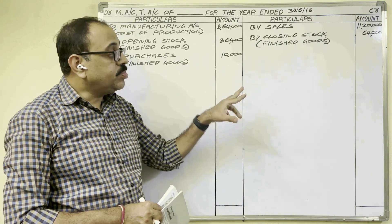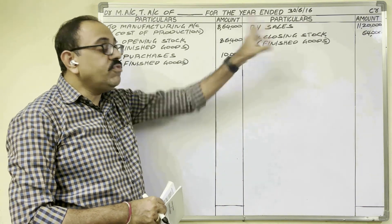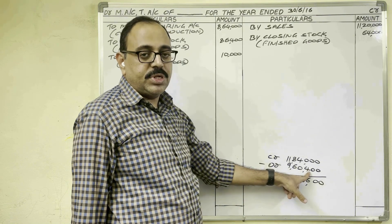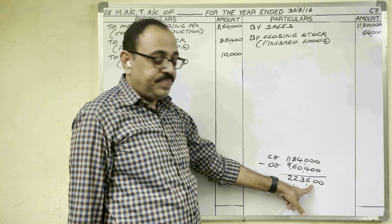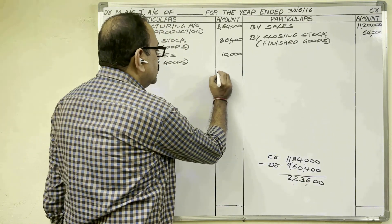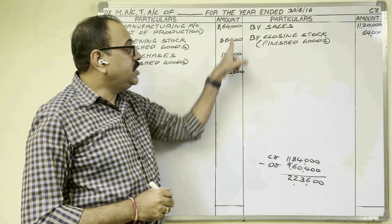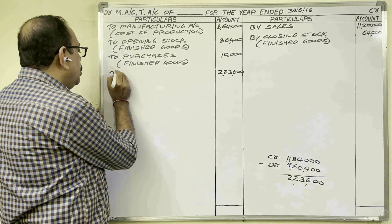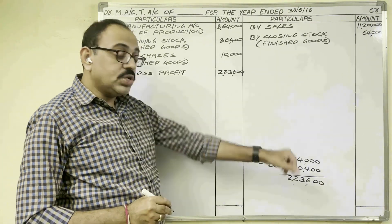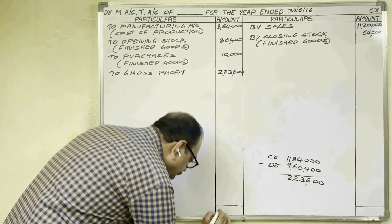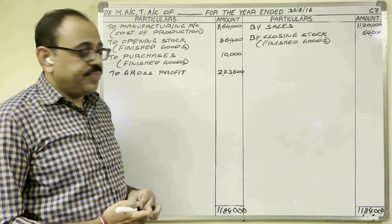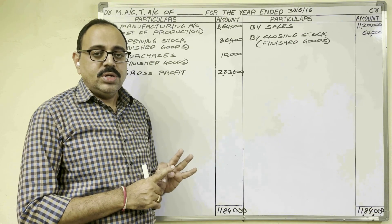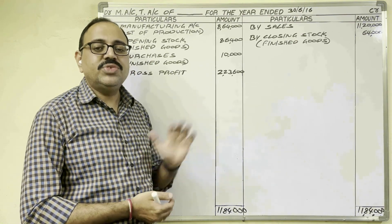All amounts are taken in the trading account. Finally we ascertain the gross profit or gross loss. Credit side total is 11,84,000 rupees, debit column total is 9,60,400 rupees, difference is 2,23,600 rupees. Debit side total is less, so we write this answer on the debit side as gross profit. So this is the end of the present video. In a full fledged problem the continuation would be profit and loss account then balance sheet, but this question asks only for manufacturing account and trading account. Hope this video is helpful to you. Thank you.